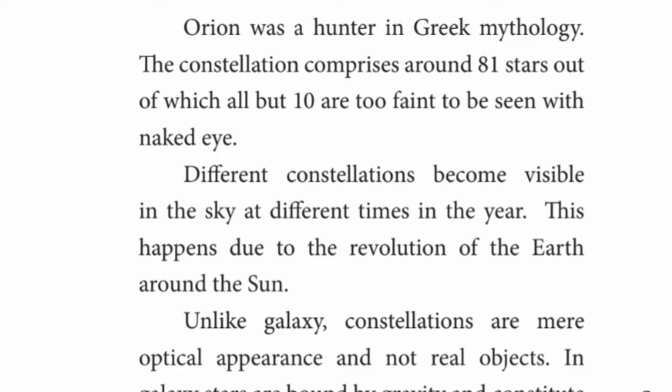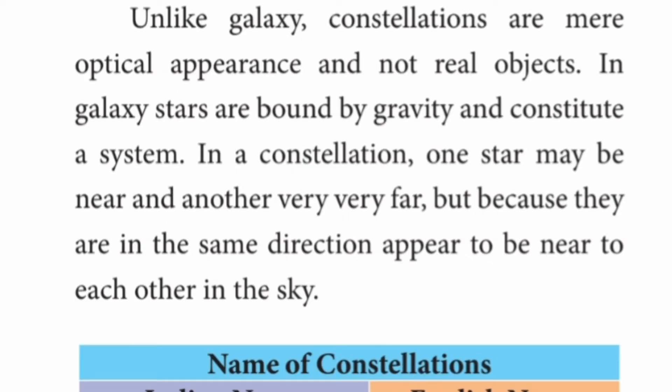Unlike galaxies, constellations are mere optical appearances and not real objects. In a galaxy, stars are bound by gravity and constitute a system. In a constellation, one star may be near and the other very far, but because they are in the same direction, they appear to be near to each other in the sky.